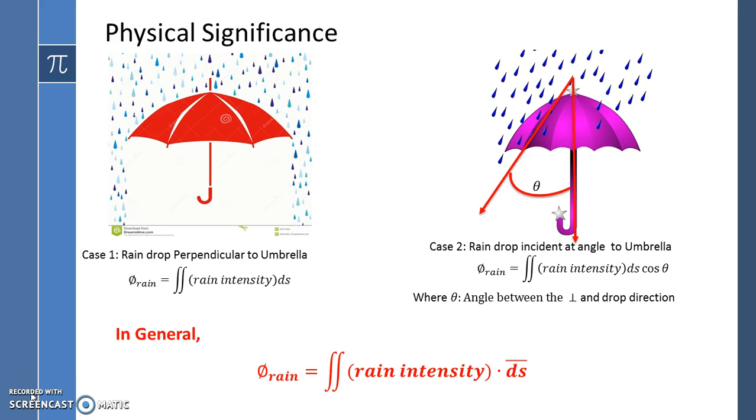Here, for case two, we can see there are three terms inside the integral: the rain intensity, surface area, and cosine theta. The dot product between the two vectors results into cosine theta. Hence, in general, we can write the flux due to rain is surface integral of rain intensity dot ds bar.